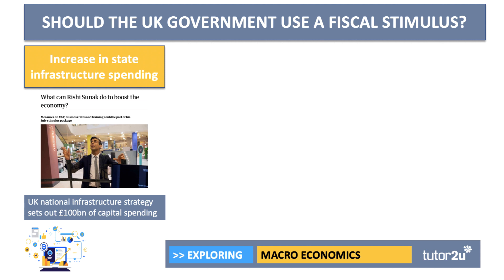There are lots of options in terms of potential fiscal stimulus policies. I'm going to focus on three. One would be to lift the size of government infrastructure spending — that is, capital spending on things like new roads, bridges, schools, hospitals, flood defence, and new social housing. The UK government has a national infrastructure strategy which plots £100 billion worth of capital spending. The government might decide to bring that forward by a few months, even a few years.